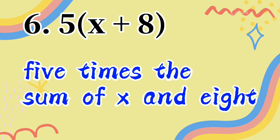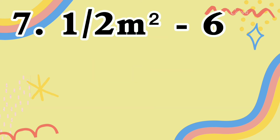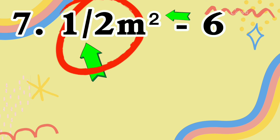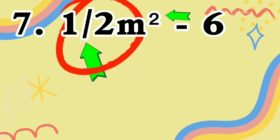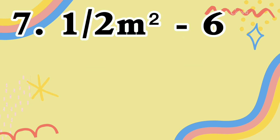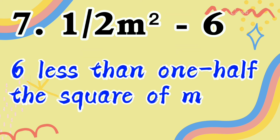You can use other words to describe the operations. Let's have number 7. In number 7, there is a fraction indicating division, an exponent, a number and variable written adjacently indicating multiplication, and a hyphen or dash symbol indicating subtraction. We can translate number 7 as: 6 less than one-half the square of m.